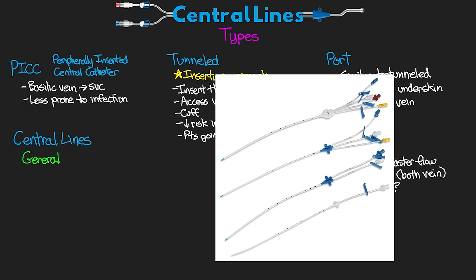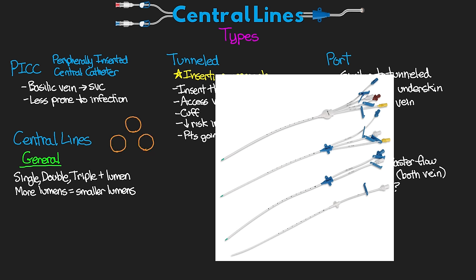When talking about standard central lines, we have two broad categories. First are our general central lines: single, double, and triple lumen. The important takeaway is that the more lumens we have, the smaller those lumens are going to be. For example, if we have a single lumen, that lumen takes up the entire bore of the catheter. If we go to a double lumen, it splits that volume in half. With a triple lumen, there is typically one larger lumen and two smaller lumens. These lumens typically have staggered exit points at the tip of the catheter.